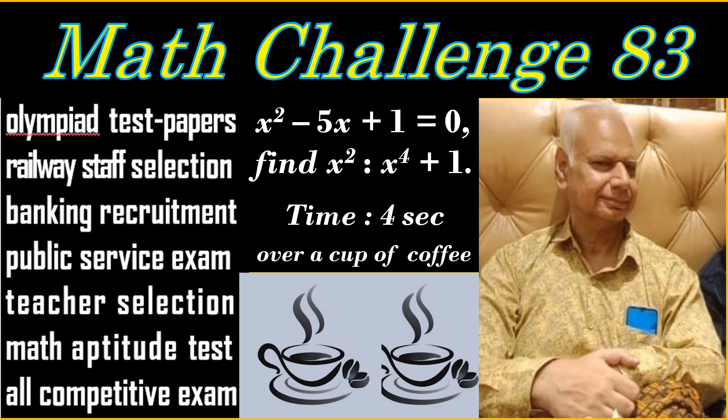We are given a quadratic equation. It is not factorizable by breaking the middle-term method. Solving it with formula would give an irrational or surd value. And time is just 3 to 4 seconds.